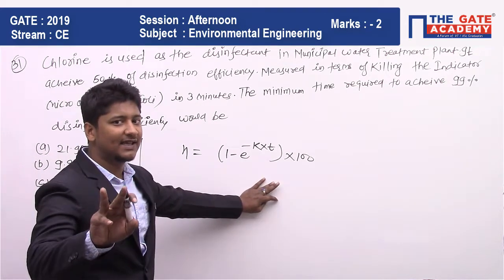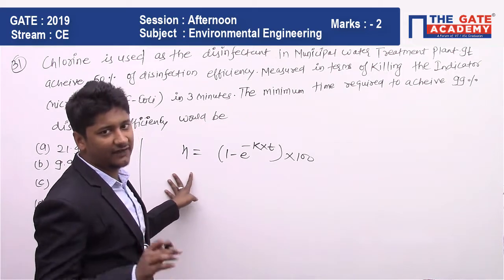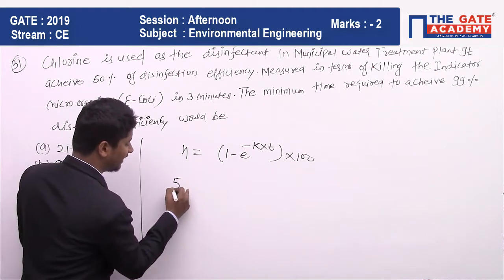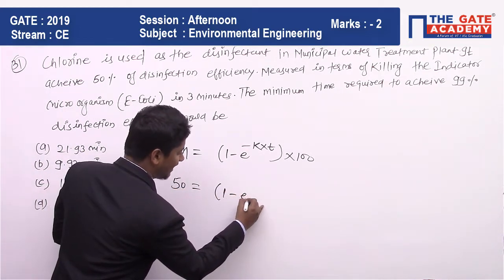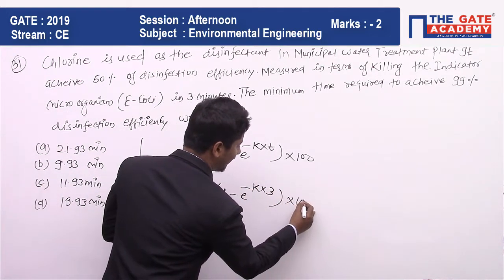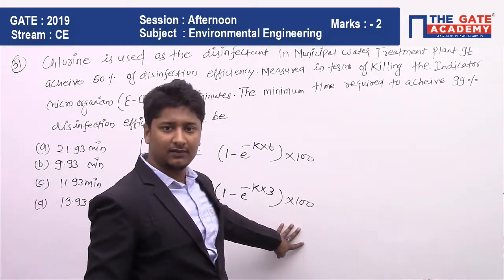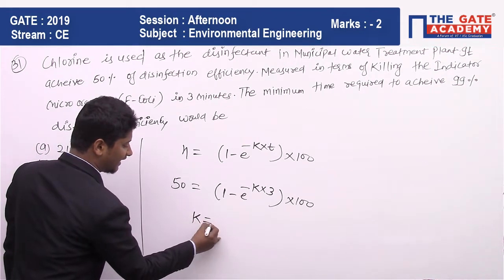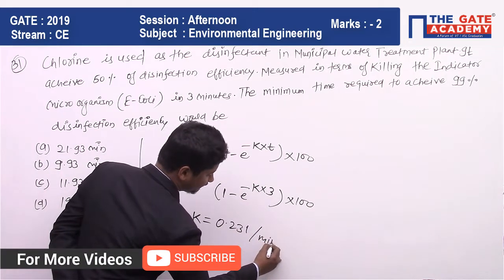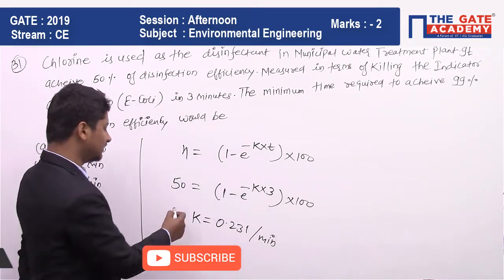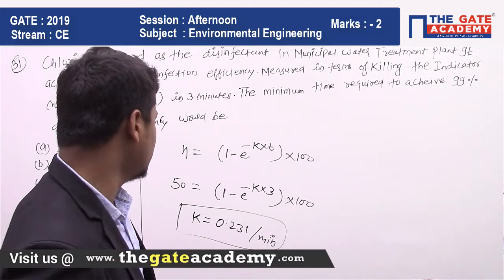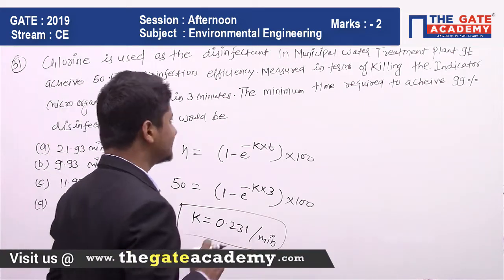We have two cases. In the first case, efficiency is 50% and time is 3 minutes. Substituting into the formula: 50 = (1 − e^(−K × 3)) × 100. Solving this gives the value of K, which is 0.231 per minute. So the rate constant K = 0.231 per minute.